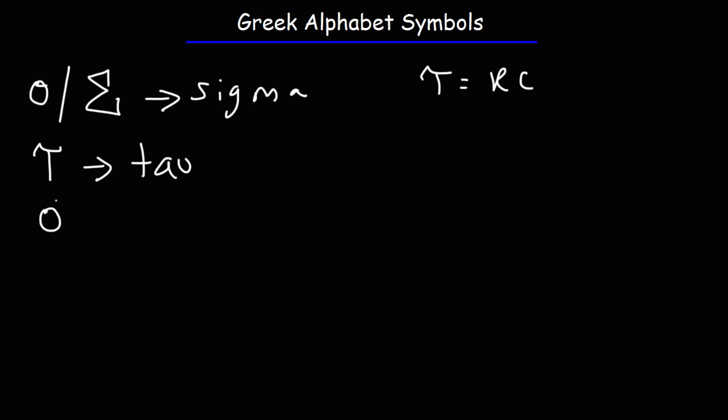The next Greek symbol that we have is phi which is another type of angle. Next we have omega. This symbol typically corresponds to angular frequency. Omega is equal to 2 pi f, 2 pi times the regular frequency.